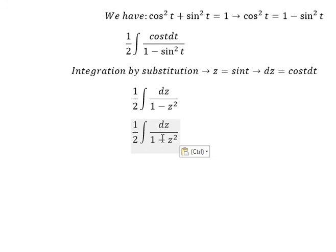1 minus z to the power of 2, we can put 1 minus z multiply with 1 plus z.